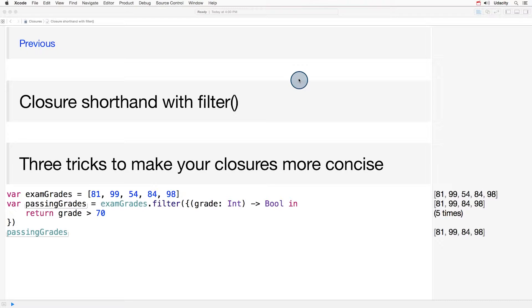The condition is passed in as a closure. Here I have an array of exam grades, and I'm going to filter this array for all the grades above 70. We'll call those grades passing grades. So I call the filter method with the object exam grades, and I pass in a closure representing the filter condition.